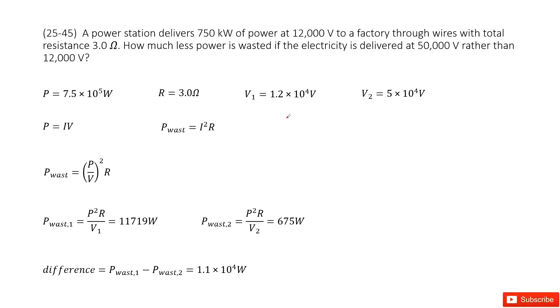Chapter 25 is about electric currents and resistance. There we look at the power station. They tell us the power station delivers the power that is 750 kilowatts of power.